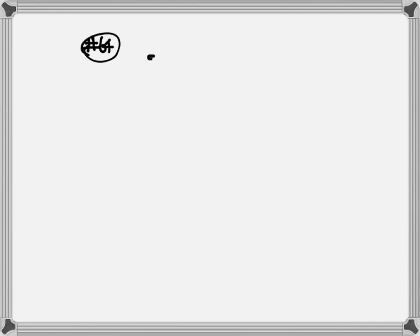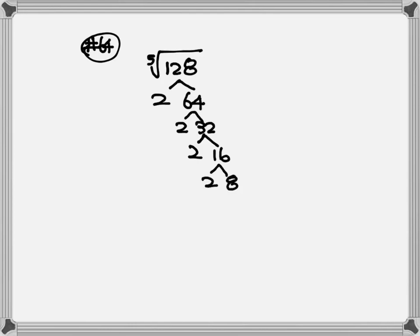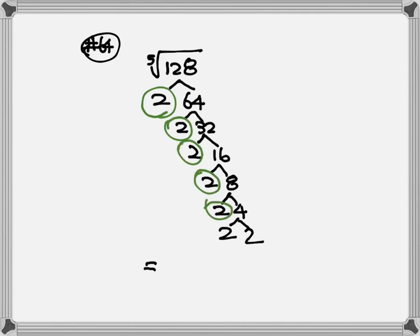Number 64: we have fifth root of 128. The little 5 outside tells us we're looking for five numbers that are the same. Breaking down 128: 2×2×2×2×2×2×2. We need five 2s: here are five 2s, so one 2 goes out. We have two 2s left, so they stay inside. Every time you have more than one number outside and inside, you multiply: outside together, inside together. So we have 2⁵√4.